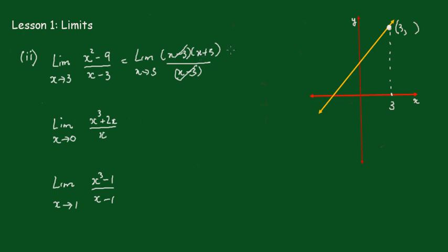And you get the limit is equal to 6. And we can see this on this graph over here. I'll draw the graph of y equals x plus 3, but x is not equal to 3.